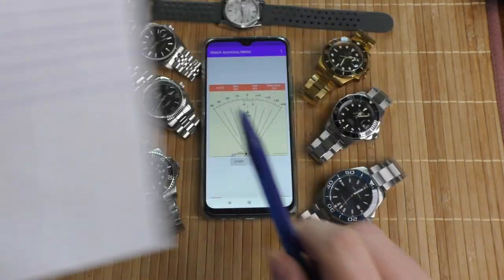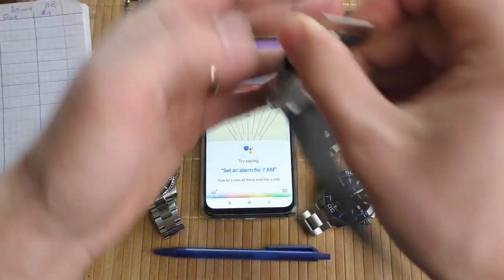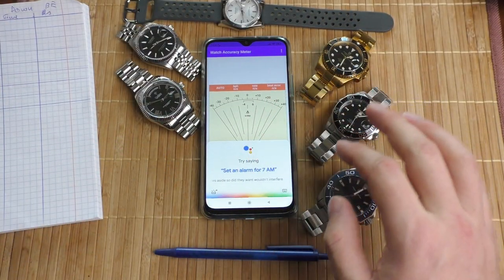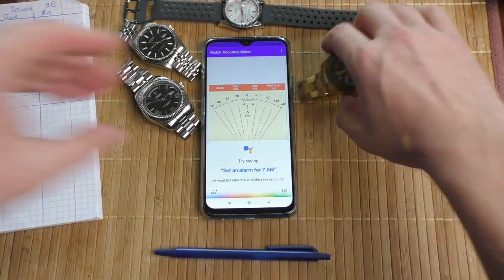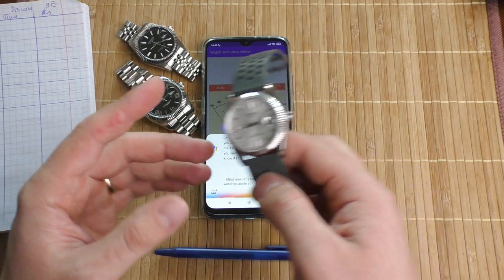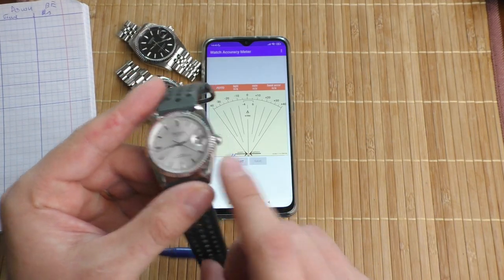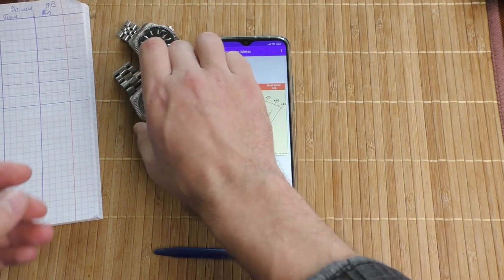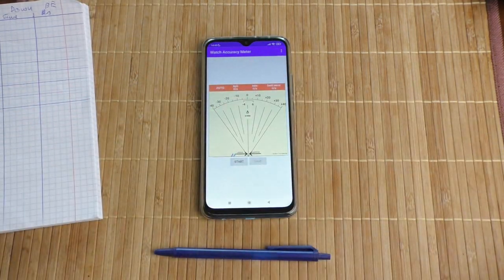Now let's take all those watches aside so they won't interfere with the TimeGrapher. Let's start messing around. Also, out of all these watches, this is the only one that I have adjusted myself. All other watches are not touched, they are original as they come.